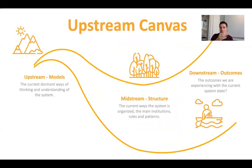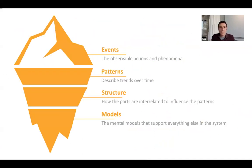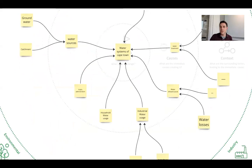And of course, this whole idea of moving upstream. The highest points of leverage are actually at the origins — right upstream. So moving away from downstream interventions, the more event-level interventions, and using the iceberg model to think about that. We walk through this so that you understand the different levels and how it can help us understand the different interventions we might create in the system — whether it's on the event, pattern, or structural level, or the mental models level.